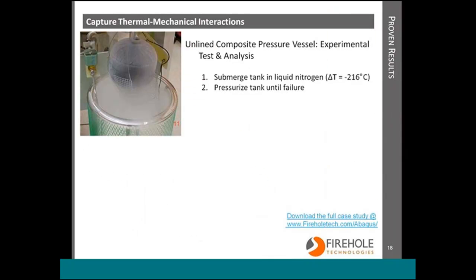I'm going to finish up with three application examples. The first is an unlined all-composite pressure vessel, and this is going to highlight the importance of capturing the thermo-mechanical interaction. In the experiment, six of these softball-sized tanks were submerged in liquid nitrogen and pressurized until failure. Experimentally, the mean leak pressure of the tanks was 1,233 PSI, and the Helios MCT analysis predicted 1,215 PSI, within a percent and a half.